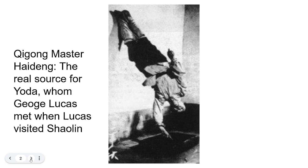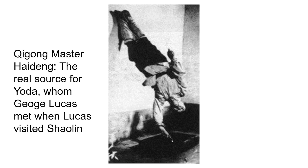Here is the secret source of Yoda from Star Wars. George Lucas went to Shaolin and met Qigong master Hai Deng, who can be seen here doing a full lotus one-finger handstand. This is the real source of Yoda, and it demonstrates anti-gravity — holding up the entire body with just one finger.